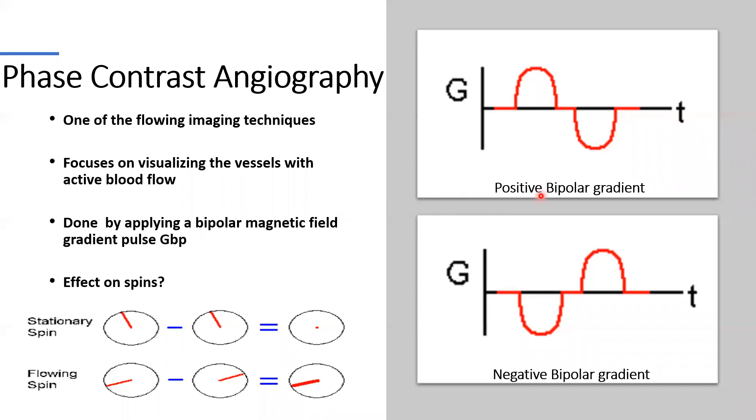This technique is done by applying a bipolar magnetic field gradient pulse. This bipolar gradient pulse is one in which the gradient is turned on in one direction for a period of time, then turned on in the opposite direction for an equivalent amount of time. This bipolar gradient pulse has two types, which are the positive bipolar gradient pulse and the negative bipolar gradient pulse.